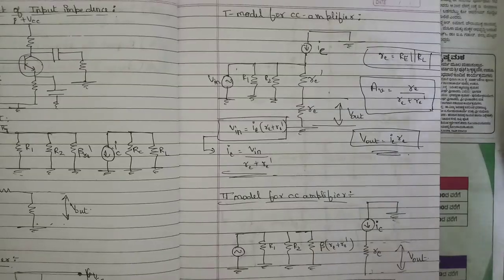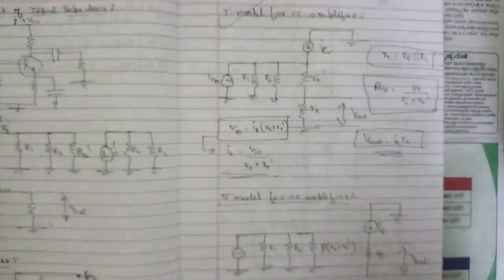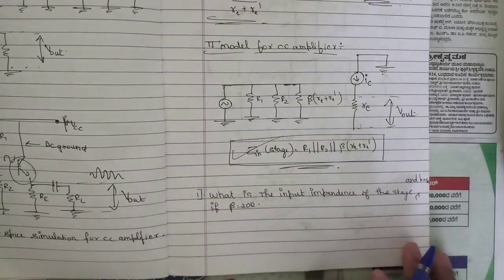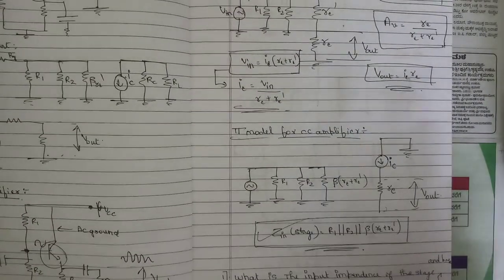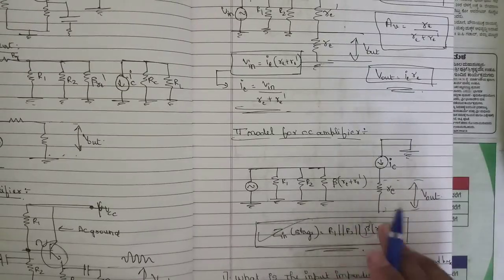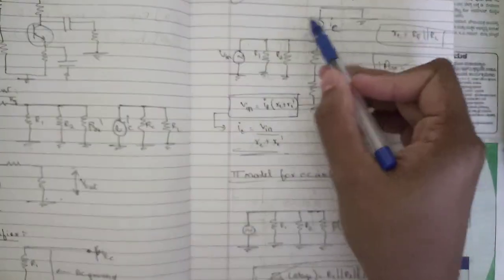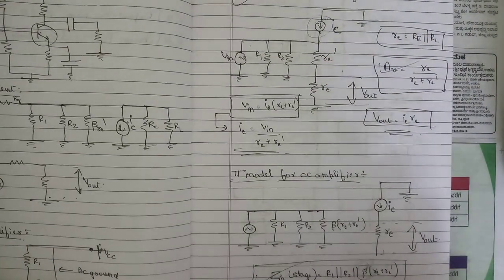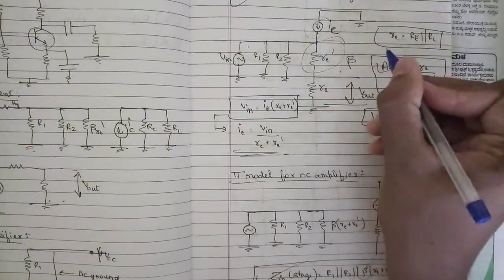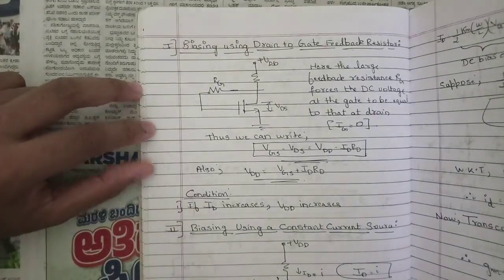One question related to the common collector amplifier requires drawing the T-model and π-model equivalent circuits, with necessary expressions for Z_in(stage) and Z_in(base). You should write the relationship between β, r'E, RE, and voltage gains. In the collector side, it is replaced by a collector voltage, and the transistor is replaced by a resistance r'E with amplification factor β remaining. From Module 2, one question on biasing using drain-to-gate feedback resistor will be asked.